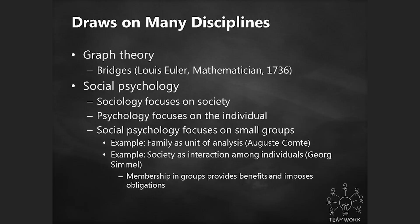Social network analysis is somewhat new, but it's actually not. It draws on a lot of different disciplines, and it contributes to a lot of different disciplines. It pulls from graph theory, for example, when we're looking at a lot of our metrics. It also pulls a lot from social psychology, especially the focus on small groups — small groups being networks of people within society. Sometimes you might look at families as the unit of analysis, but you're really looking at what those relationships mean.